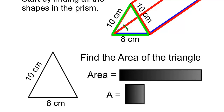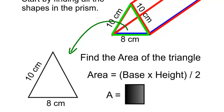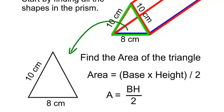The next step is to find the area of the triangle. The formula for area of a triangle is: area is equal to base times height divided by 2, which can be written as A equals BH over 2. The base is going to be 8 centimeters.